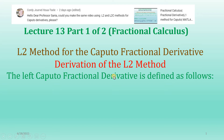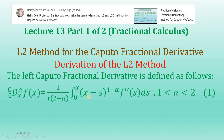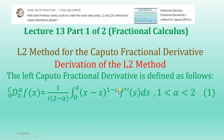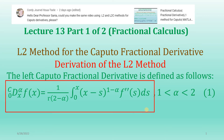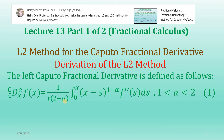The left Caputo fractional derivative is defined by equation 1. In this equation, alpha lies between 1 and 2. When alpha is between 1 and 2, the definition for the Caputo derivative involves the second derivative, the kernel has a power of 1 minus alpha, and the coefficient of the integral is 1 upon gamma of 2 minus alpha. So equation 1 is the definition for the Caputo fractional derivative when the order alpha lies between 1 and 2.